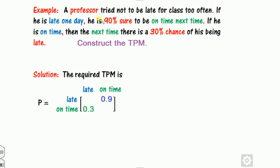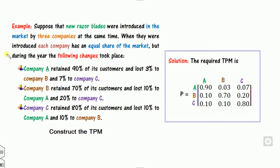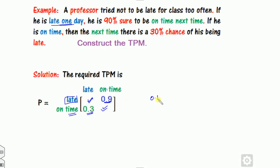For the professor example, there are two states: late and on-time. If he is late one day, there is a 90% chance he will be on time the next day. If he is on time, there is a 30% chance he will be late next time. So the TPM has late-to-on-time = 0.9 and on-time-to-late = 0.3, with the remaining entries calculated as 0.1 and 0.7.